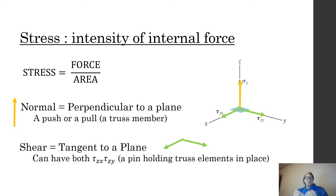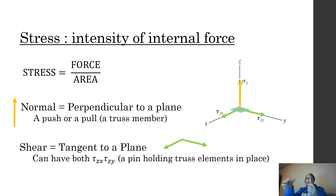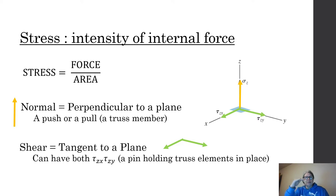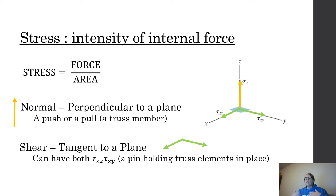If I have a bolted connection — pretend the rubber band is a plate with a bolt in it — as I'm pulling with a normal axial load and we cut this to look at the internal force, we're going to see it's a shear force. It becomes a shear force because it's parallel to the cross section of our bolt. Normal means perpendicular to the cross section; shear means tangent or parallel to the plane.